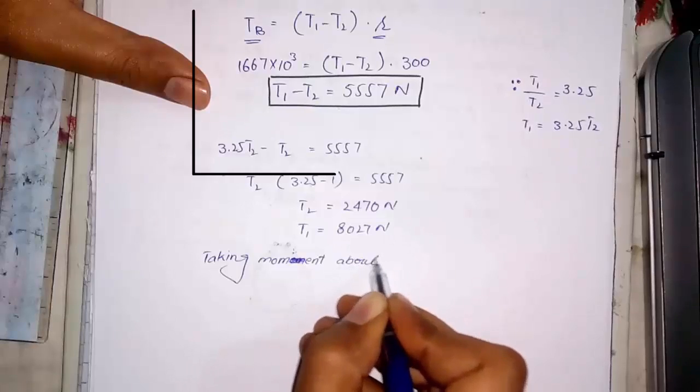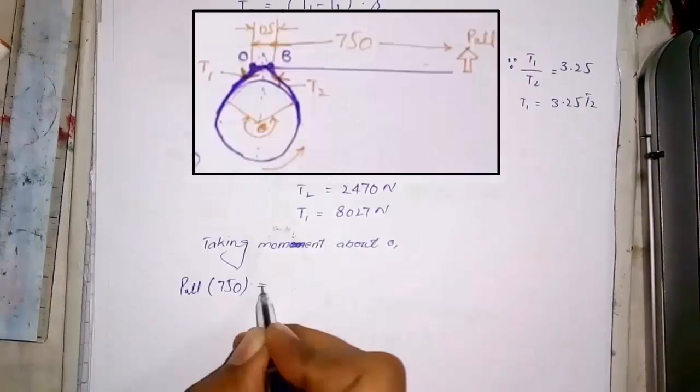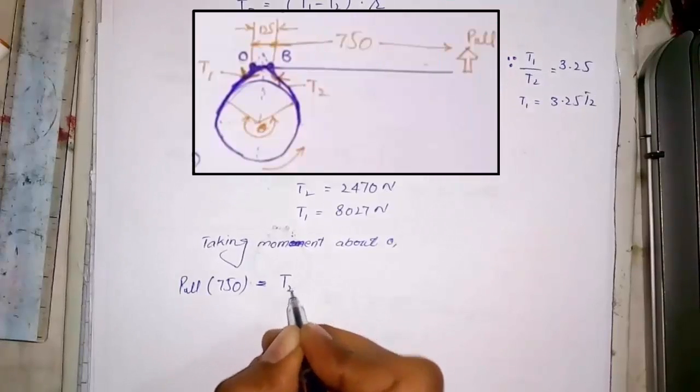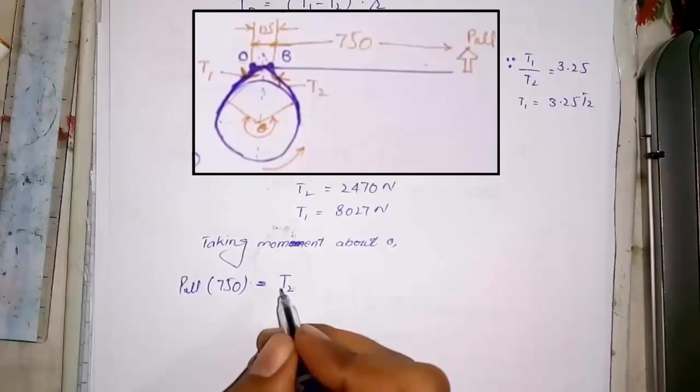Next taking moment about O pivot point. Pull force multiplied by distance. Now for T2 force. As T2 is slack side, so its direction would be in opposite of the direction of the drum's rotation.